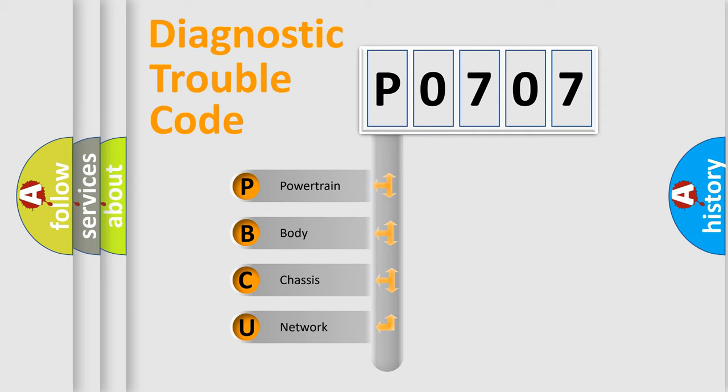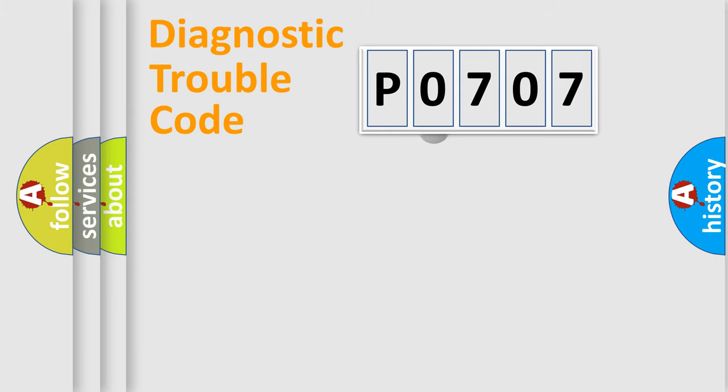We divide the electric system of automobile into four basic units: Powertrain, Body, Chassis, and Network. This distribution is defined in the first character code.